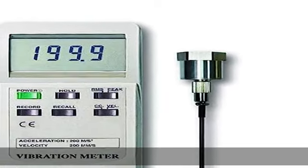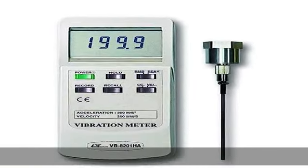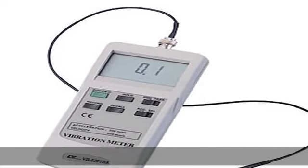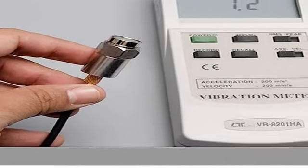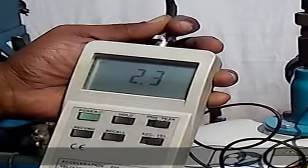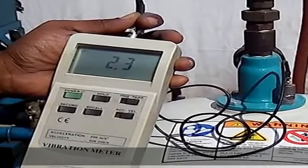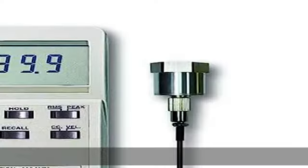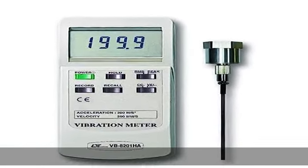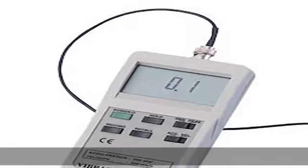About this item: velocity range 200 mm/s, 0.5 to 199.9 mm/s. Acceleration range 200 meters per square second, 0.5 to 199.9 meters per square second. Accuracy plus or minus 5% plus 2d. Display: LCD display. Frequency range: